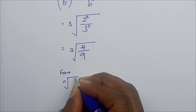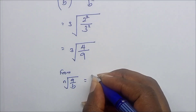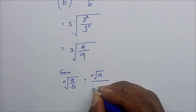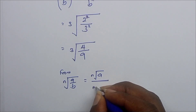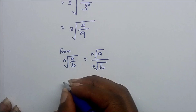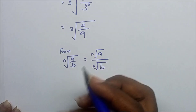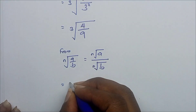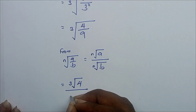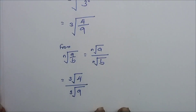Now, from the rule that the nth root of (a over b) equals nth root of a over nth root of b, we can write this as the cube root of 4 over the cube root of 9.